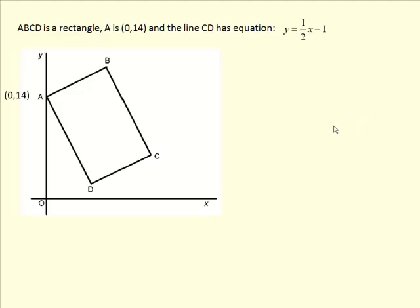Hello and welcome to another video about straight line graphs and equations. In this diagram, ABCD is a rectangle, the point A here is the point (0,14), and the line CD, this one here, has this equation: y equals a half x minus 1.